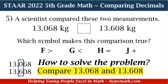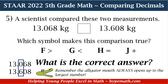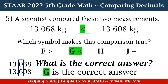So which number is greater? Since six is larger than zero, and the alligator mouth always opens up to the largest number, the correct answer is G — less than. We have our alligator mouth open up to 13 and 0.608 kilograms because the six in the tenths place is larger than the zero. So 13 and 68 thousandths kilograms is less than 13 and 608 thousandths kilograms.